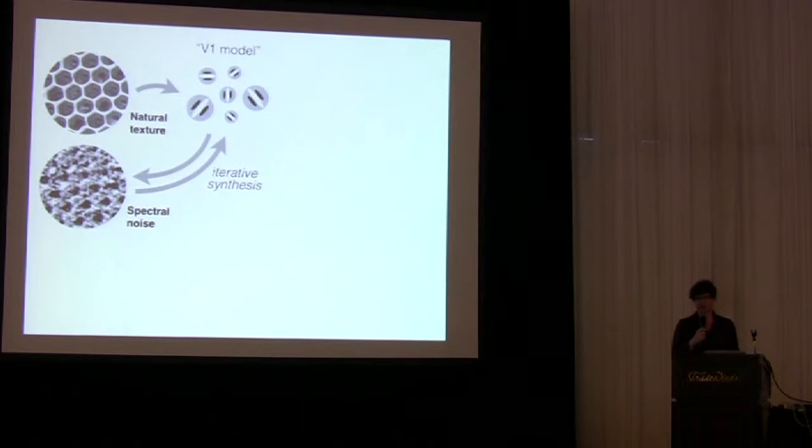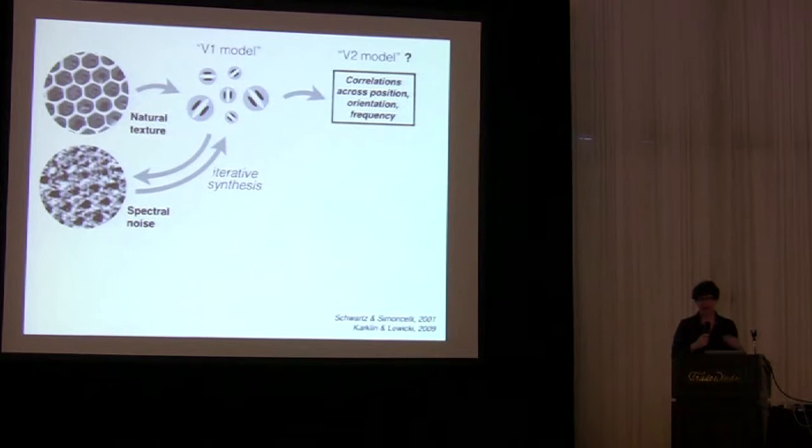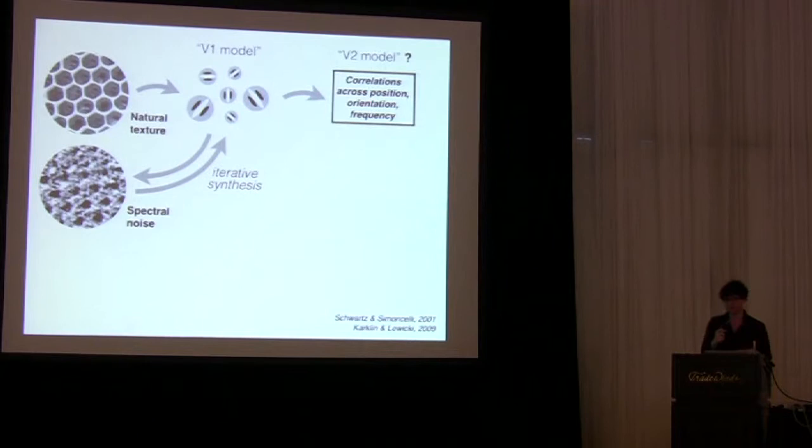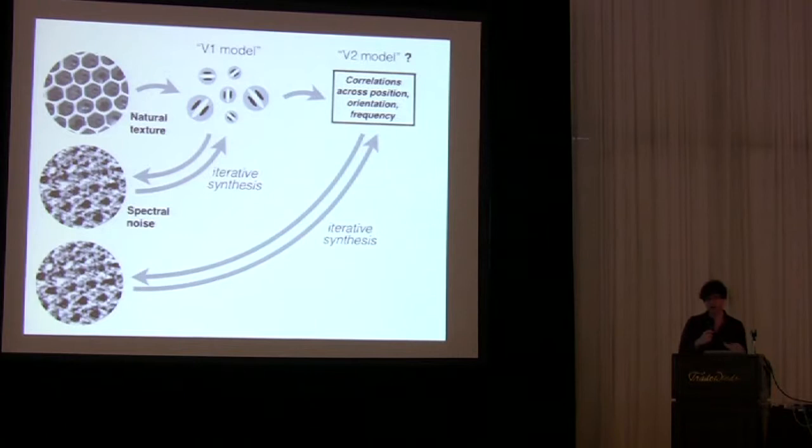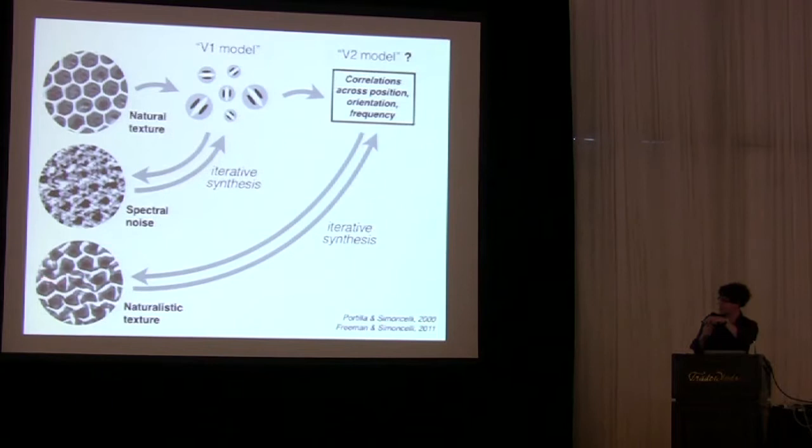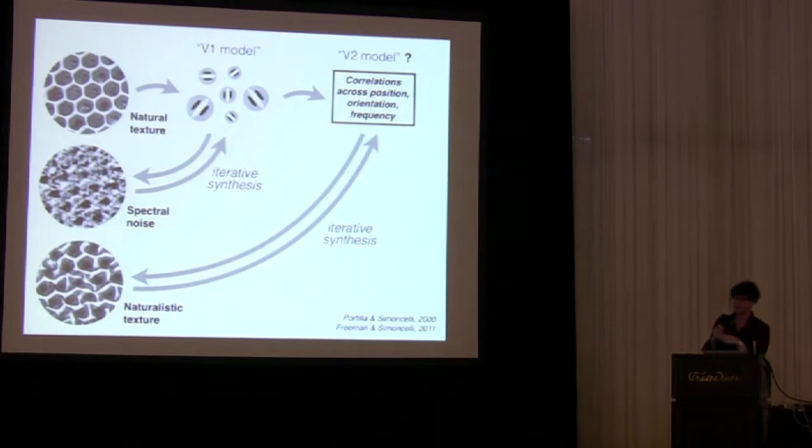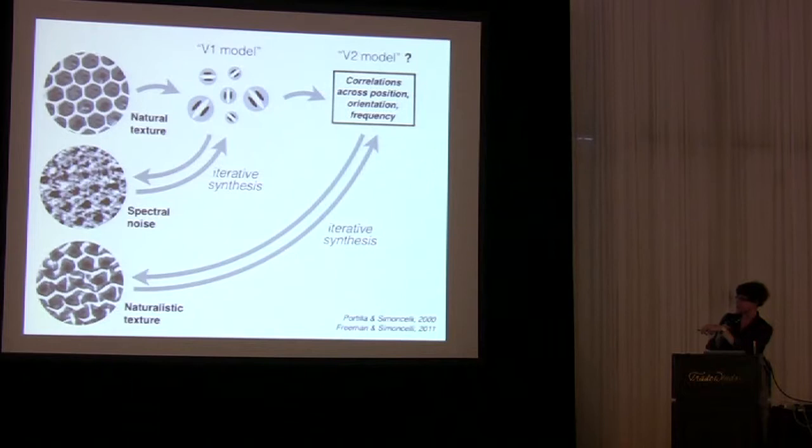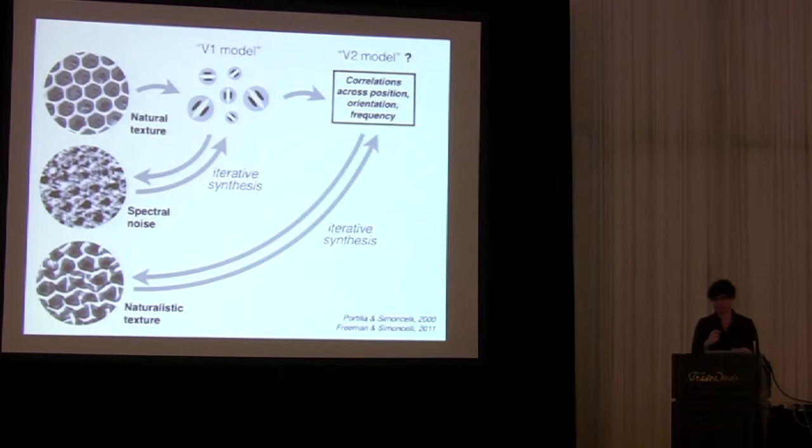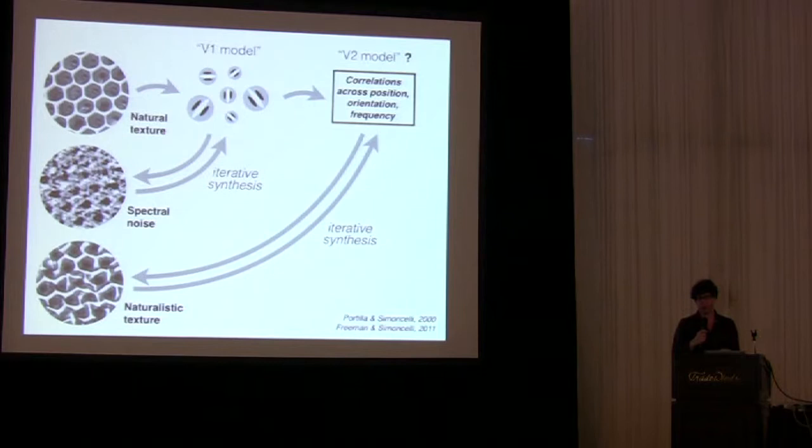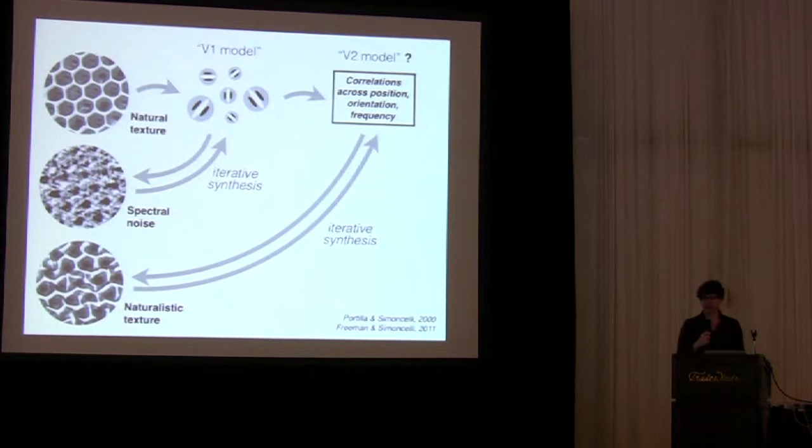We can capture a lot of those additional elements by adding a second stage to our representation that specifically computes correlations across different orientations, different positions, and different spatial frequencies. We can now repeat the synthesis procedure, except now we're going to generate an image that is additionally matched for the output of those higher-order correlations. And what we find when we do this is an image that I'll call a naturalistic texture that has many of the more naturalistic features of the original one. The important point to make is that we're nowhere explicitly parameterizing that this thing has a bunch of corners in it, that simply arises from a statistical representation that's well defined by the correlations that we're computing. We hypothesize that these higher-order correlations might be related to what an area like V2 is representing.